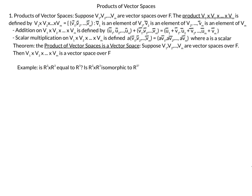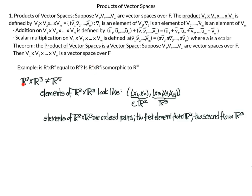Our next example is a question: is R2 cross R3 equal to R5? The answer is no, because elements of R2 cross R3 look like an ordered pair matched with an ordered triplet — the first ordered pair is an element of R2 and this triplet is an element of R3. Whereas elements of R5 are quintuplets: (x1, x2, x3, x4, x5). So they are not equal.